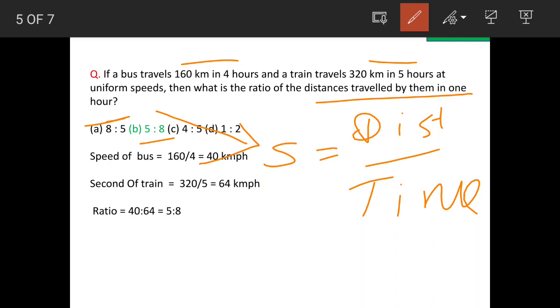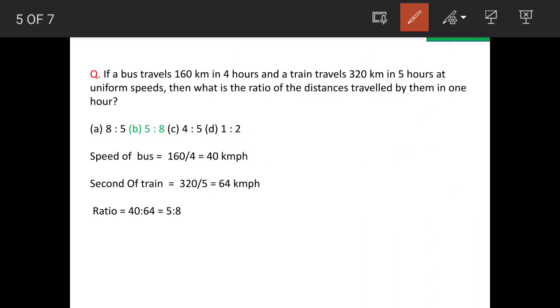This is actually indirectly asking about the speed. So now we will work out the speed of the bus and the train and then find the ratio.